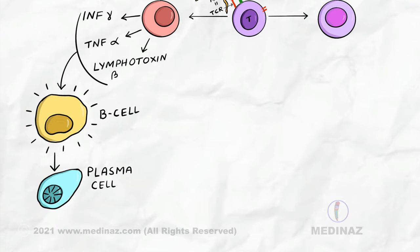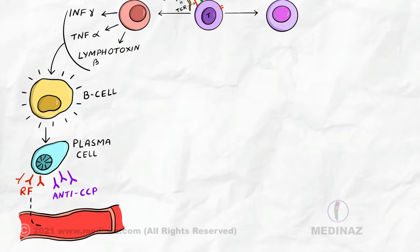Now, these plasma cells secrete autoantibodies like rheumatoid factors and anti-cyclic citrullinated peptides. These T cells and autoantibodies enter the circulation and reach the joint.